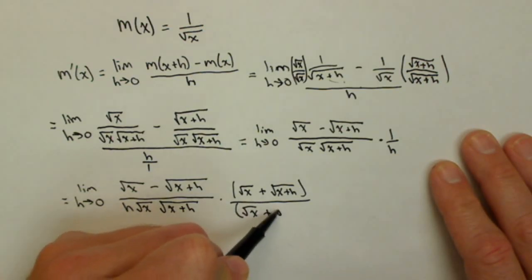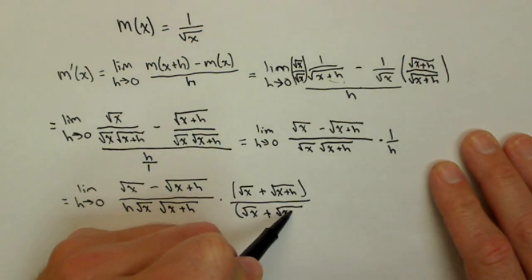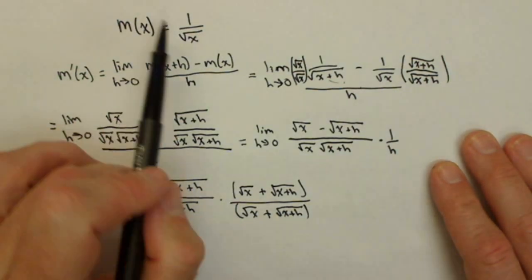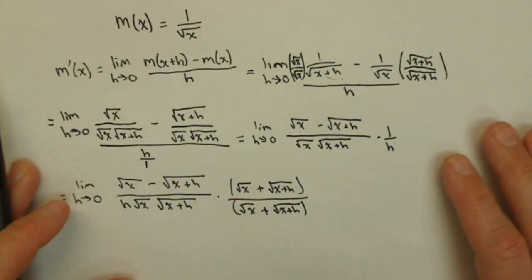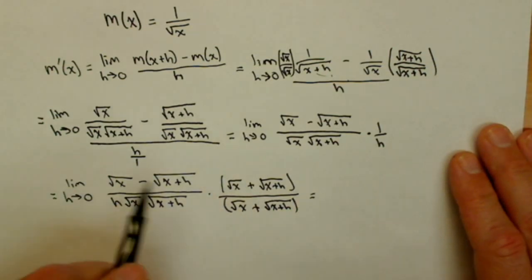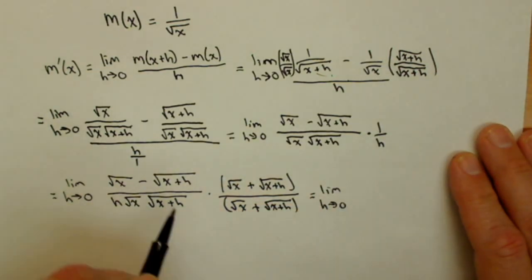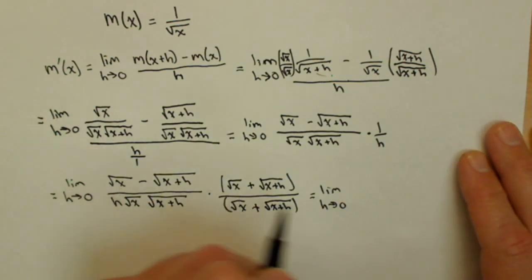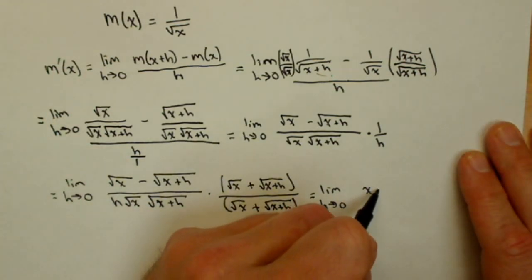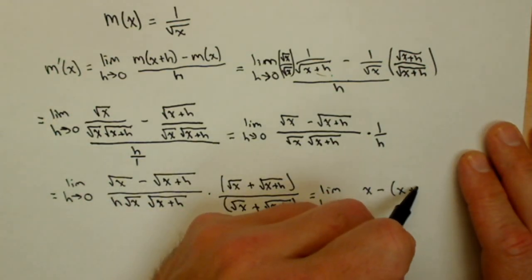I'm not going to go through all the steps of this. You can look at my video for the derivative of square root of x if you want to see all the steps. But this foils out very nicely on top. And, in fact, all we end up with is limit as h approaches zero, and on top, this is actually just going to come down to x minus x plus h.